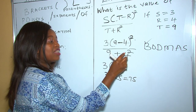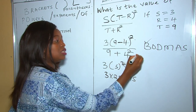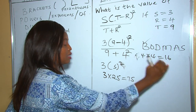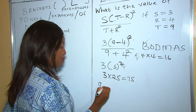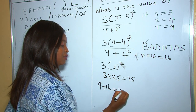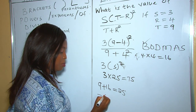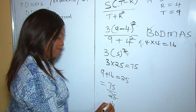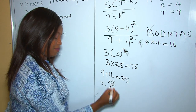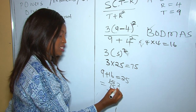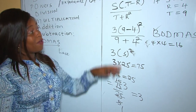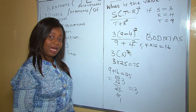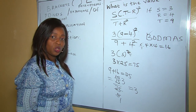Now let's go to the denominator, which is 9 plus 4 squared. Since 4 is squared, it means 4 times 4 which is 16. So it becomes 9 plus 16, which is 25. Now our numerator is 75 and our denominator is 25. We simplify: 75 over 25 — dividing both by 5 gives 15 over 5, which is 3. Therefore the value of the expression is 3.